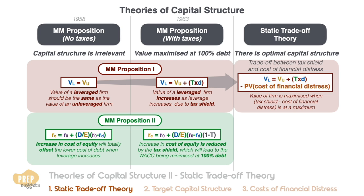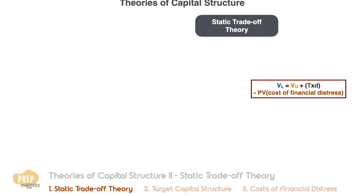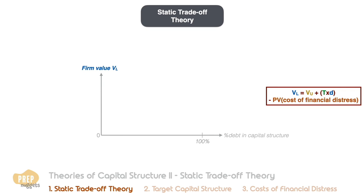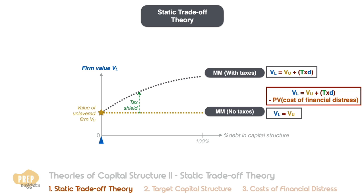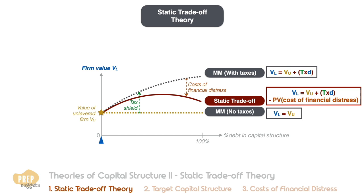Let's illustrate this to help you understand. We plot the firm value against the degree of financial leverage. When debt is zero, this is the value of an unlevered firm — this line also represents MM proposition with no taxes, where the value of a leveraged firm equals the value of an unlevered firm. Factoring in tax shield, the firm value should always be increasing, representing MM proposition with taxes, maximized at 100% debt. But subtracting the cost of financial distress — which increases with leverage — gives us this curve, representing the static trade-off theory, where the optimal capital structure is the sweet spot that maximizes firm value.